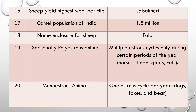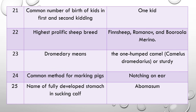Question 20: What are monoestrous animals? The answer is animals with one estrous cycle per year. Examples are dogs, foxes, and bears. Question 21: What is the common number of births of kids in the first and second kidding? Commonly, the first and second kidding yield only one kid.